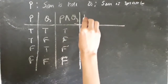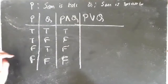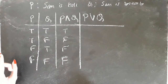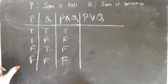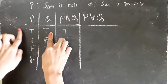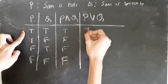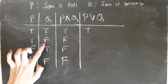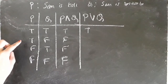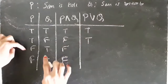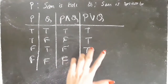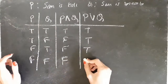For P or Q (disjunction), either one or both statements must be true. When both are true, P or Q is true. When P is true and Q is false, it is still true. When Q is true and P is false, it is also true. Only when both are false is P or Q false.